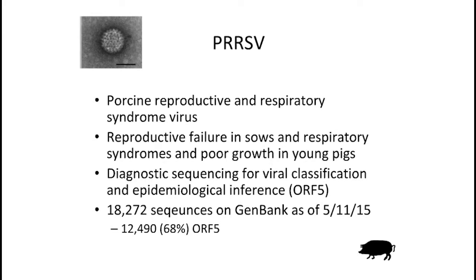For many years, people have been generating large datasets of open reading frame 5 sequences from this virus — that open reading frame codes for the major envelope glycoprotein. On GenBank there were over 18,000 PRRS virus sequences, and about 68%, or over 12,000, were ORF-5 sequences. This is a massive database of a virus in veterinary medicine, used for viral classification and epidemiologic inference.